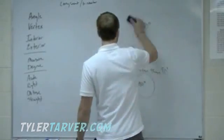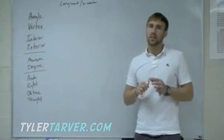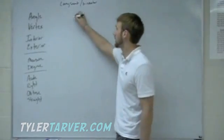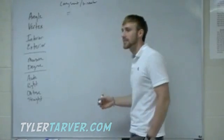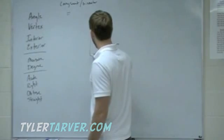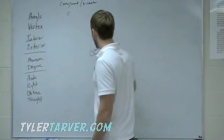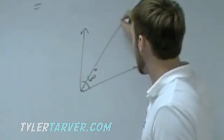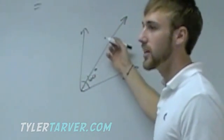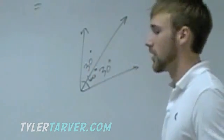Congruent means the exact same — it's equal. So if two angles are congruent, you can just set them equal to each other. Bisect means it cuts it in half. So if you have an angle of 60 degrees and you have an angle bisector, it cuts it in the middle, so it would be 30 and 30.